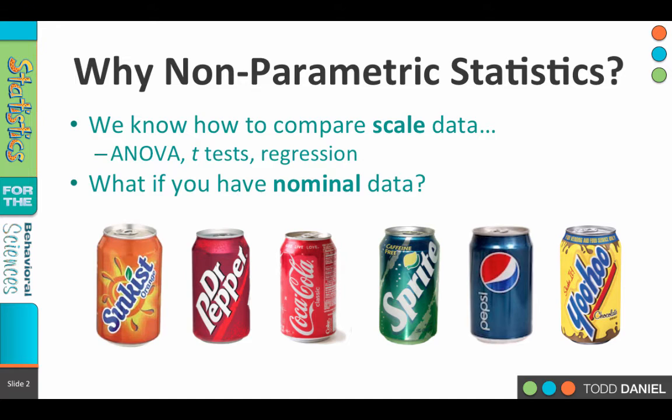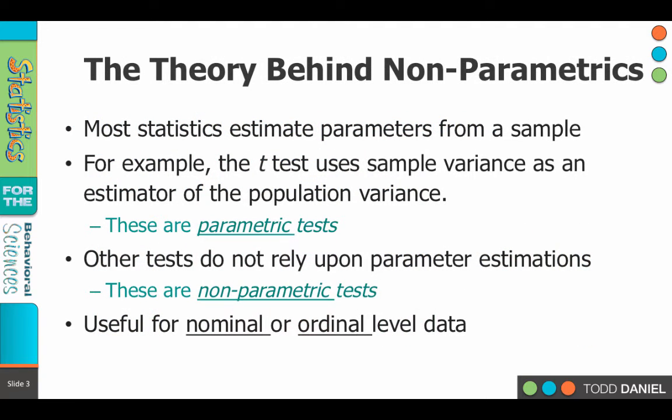How do we do comparisons with that? We have options with non-parametric statistics that do not require us to have parametric assumptions. Most statistics estimate parameters from the sample — we would do a sample and then use the value of the standard deviation from the sample to estimate the value of the standard deviation in the population. Now we're going to use a different type of test, not like a t-test which relies upon assumptions about the population, but rather a type of test that does not rely upon parametric assumptions. These are called non-parametric tests.